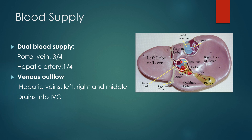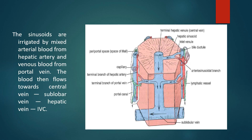The liver is the first organ which receives a large number of noxious and toxic substances absorbed from the GIT. In addition to the 75% blood from the portal vein, the liver also receives 25% oxygenated blood from the hepatic artery, which is a branch of the celiac trunk. The venous outflow is via the hepatic veins — left, right, and middle — which drain into the inferior vena cava. Sinusoids are irrigated by this mixed arterial blood.